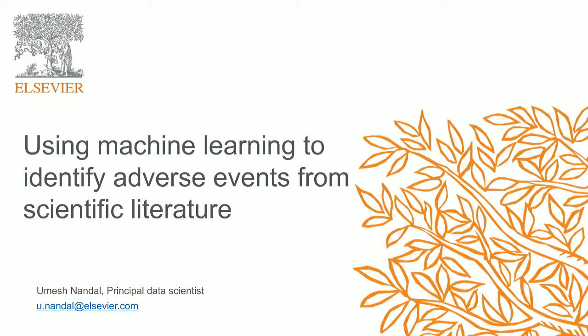With a background in chemistry and computational biology, Umesh is applying state-of-the-art methods in machine learning and NLP to improve as well as build Elsevier's new life sciences products. Prior to joining Elsevier, he used various computational approaches to analyze molecular data generated from high-throughput technologies to understand biological processes in healthy and diseased organisms. During his PhD, he worked on comparison of mouse models with humans by building a network-based integration method that can combine their biological networks.